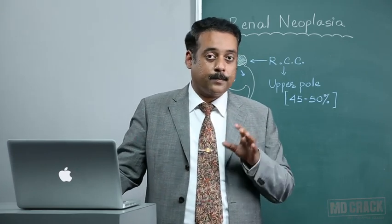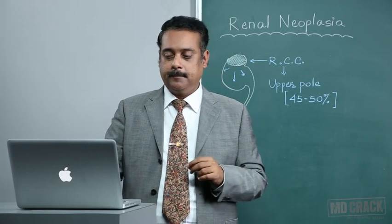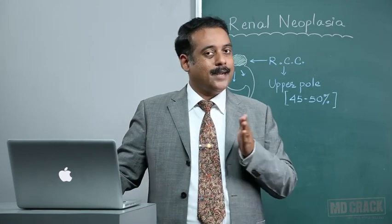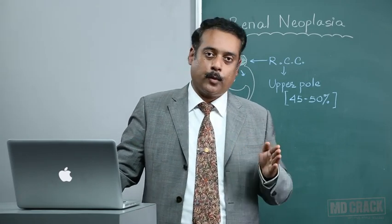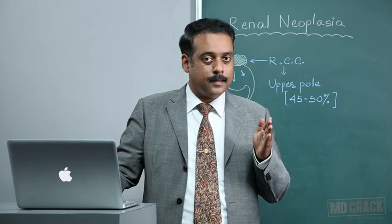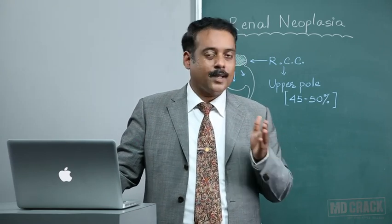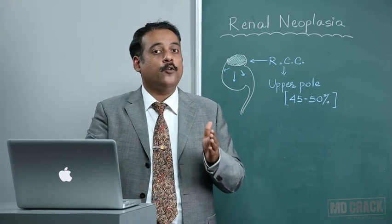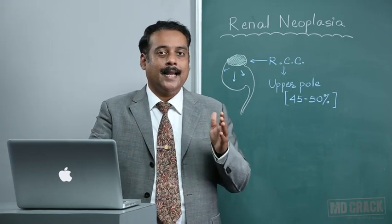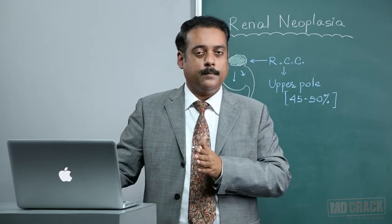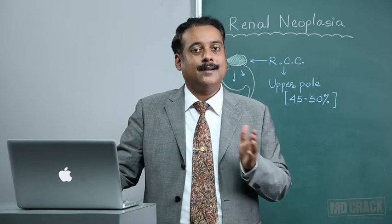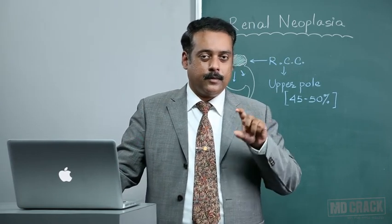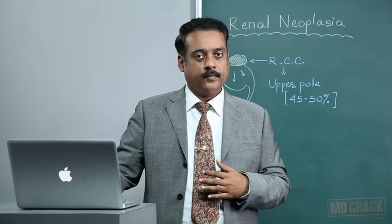To summarize: Wilms Tumor and RCC are both very important renal malignant tumors. Wilms Tumor occurs in children and RCC in adults. Both can be treated; surgery forms the mainstay in both scenarios, and the usual outcome is good in both, provided you plan your surgery, plan your management, and choose your options wisely. Thank you.